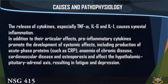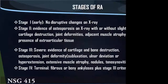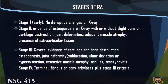The process involves proliferation and angiogenesis in the synovial lining, neutrophil accumulation in synovial fluid, cell proliferation, cartilage invasion, and swelling in small joints associated with pain, stiffness, and fatigue. Stages of RA: Stage 1 — early, no disruptive changes on X-ray. Stage 2 — evidence of osteoporosis on X-ray, with or without slight bone changes.